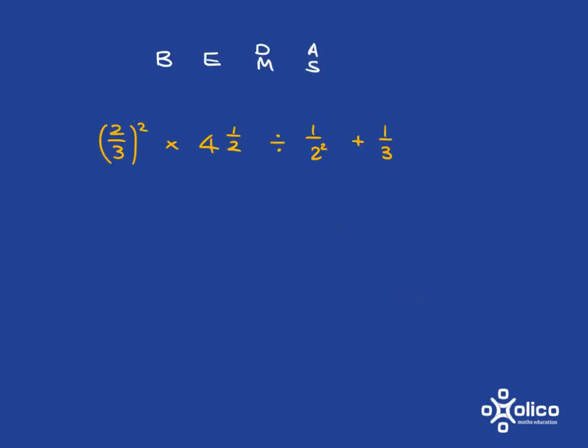Let's do a calculation involving BEDMAS. BEDMAS tells us that the first thing we need to look for are the brackets. We do have brackets here, but there's nothing really to sort out inside the brackets, so we can move on.